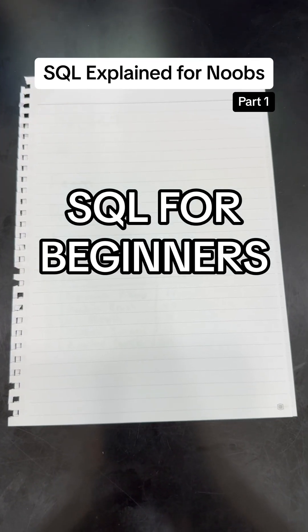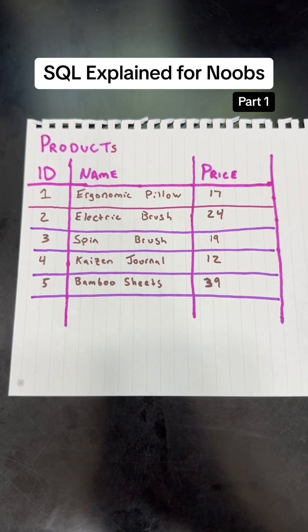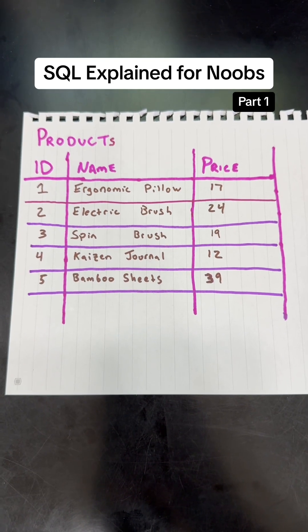SQL explained simply for noobs part one. This is our data table. It's called the products table.